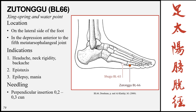The next point is Zutonggu, Bladder 66, the ying spring and water point of the meridian. It is located on the lateral side of the foot in the depression anterior to the fifth metatarsal phalangeal joint. Palpate to the head of the fifth metatarsal, then go anterior and slightly inferior to find the small depression just below the base of the first phalanx. Indications include headache, neck rigidity, backache, epistaxis, epilepsy, and mania. Needling is perpendicular 0.2 to 0.3 cun.